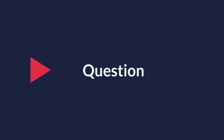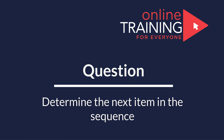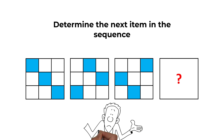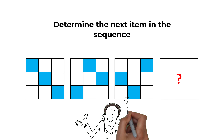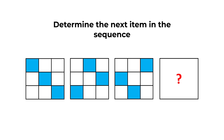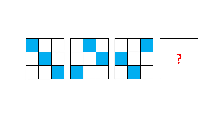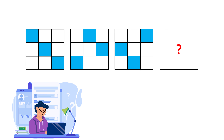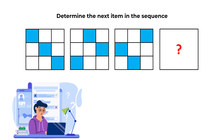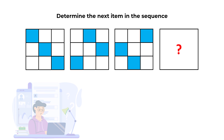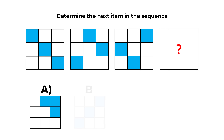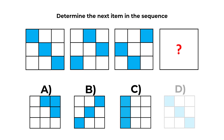Here is a very interesting problem that you might frequently get on the test. You need to determine the next item in the sequence. You are presented with a sequence of large squares, each containing 9 small squares inside, and small squares are of different colors. You need to determine the next item in the sequence, and you have 4 different choices: A, B, C, and D.